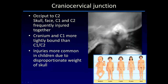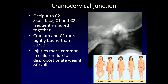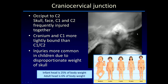We'll start by looking at craniocervical junction injuries, which extend from the occipital condyles down to C2. There are often multiple injuries in this area that go together. We have to remember that injuries are particularly common in this region in children because of the disproportionate weight of the skull relative to the rest of the body. In the newborn, about a quarter of the entire length of the body is made up of the skull, and that diminishes significantly with growth.